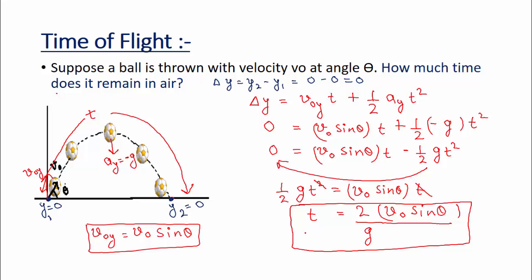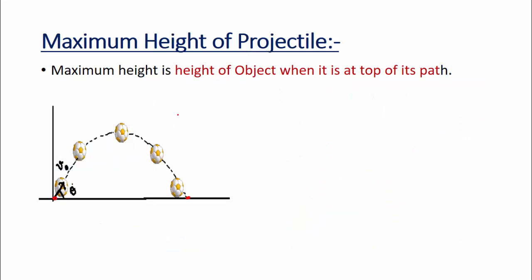Next is maximum height of the projectile. The height of the ball at any point is its vertical displacement from the ground. Maximum height is the height when the object is at the very top of its path. At that top point, the vertical component of velocity goes to zero.